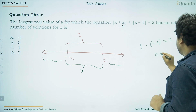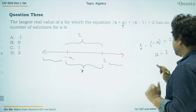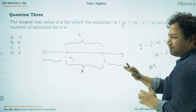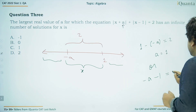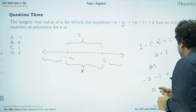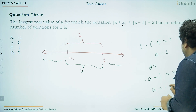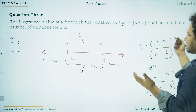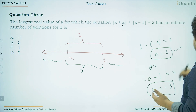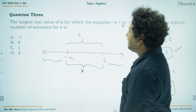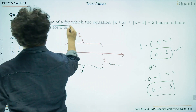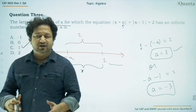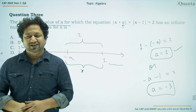We can set 1 − (−a) = 2, which gives a = 1. Alternatively, −a − 1 = 2 gives a = −3. Between −3 and 1, the maximum is 1. So the largest value of a is 1, which is option C. This is the most beautiful way to solve this question.